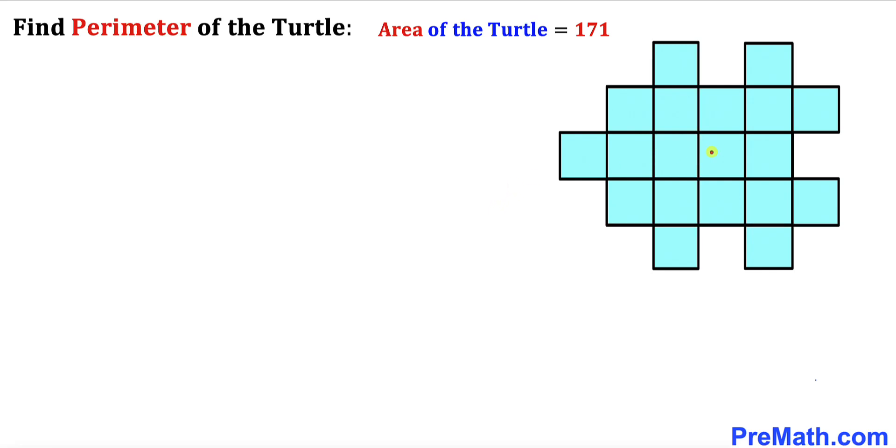Welcome to PreMath. In this video we have got this turtle shape diagram that consists of a bunch of blue squares. The area of this whole turtle is 171 square units. Now we are going to calculate the perimeter of this turtle. Please don't forget to give a thumbs up and subscribe.